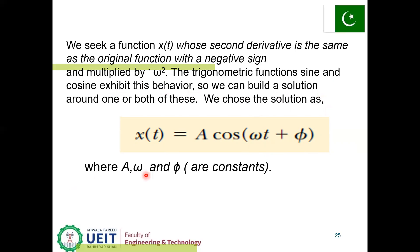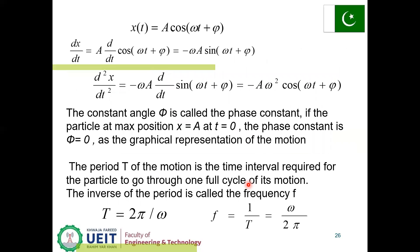Differentiating x(t) = A cos(ωt + φ): dx/dt = −ωA sin(ωt + φ). Differentiating again: d²x/dt² = −ω²A cos(ωt + φ). The constant angle φ is called the phase constant. If the particle is at maximum position x = A at t = 0, then the phase constant φ = 0.